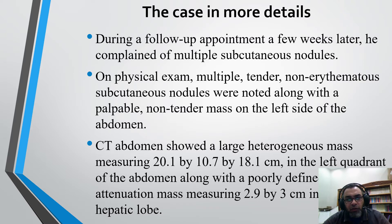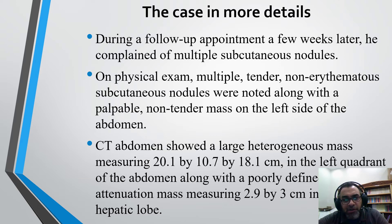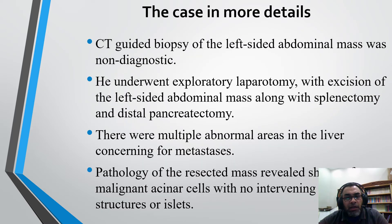During the follow-up appointment a few weeks later, he complained of multiple subcutaneous nodules. On physical examination, multiple tender non-erythematous subcutaneous nodules were noted along with a palpable non-tender mass on the left side of the abdomen. CT abdomen showed a large heterogeneous mass measuring 20.1 x 10.7 x 18.1 cm in the left quadrant, along with a poorly defined low-attenuation mass measuring 2.9 x 3 cm in the right hepatic lobe. CT-guided biopsy was non-diagnostic, so he underwent excisional laparotomy with splenectomy and distal pancreatectomy.